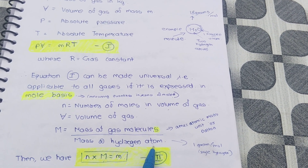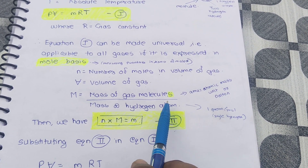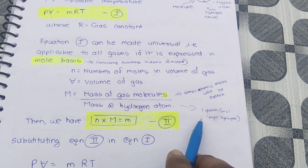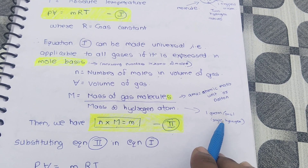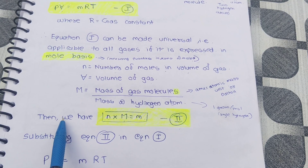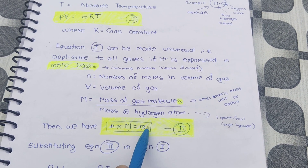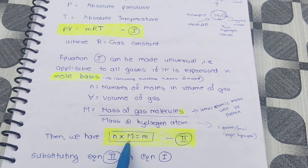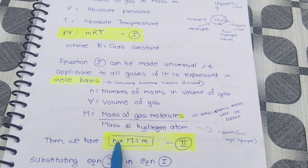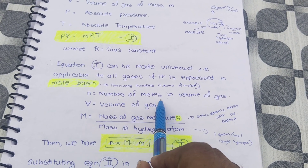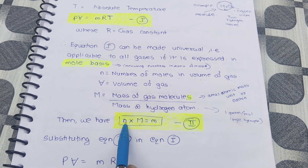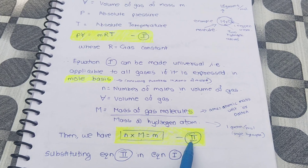The mass of hydrogen atoms present in gas — the mass of a single hydrogen atom is one gram per mole. This is for understanding and explanation purposes. So, small m is equal to capital M into small n, where capital M is the mass of gas molecules and small n is the number of moles in the volume of gas. This is equation two.